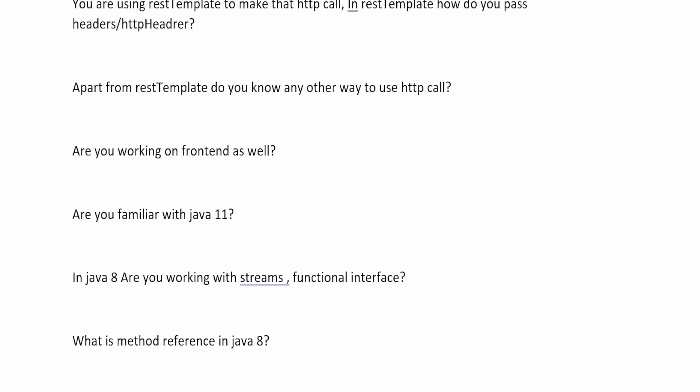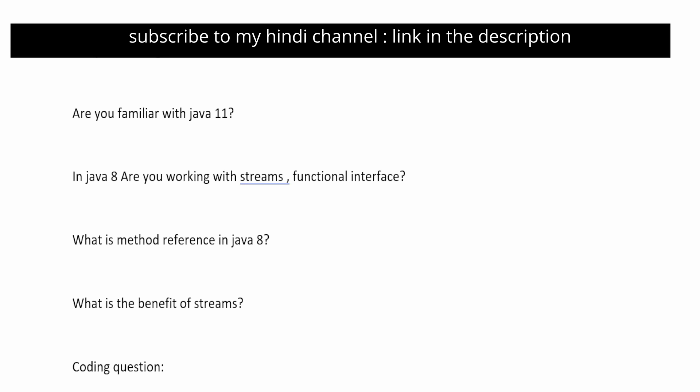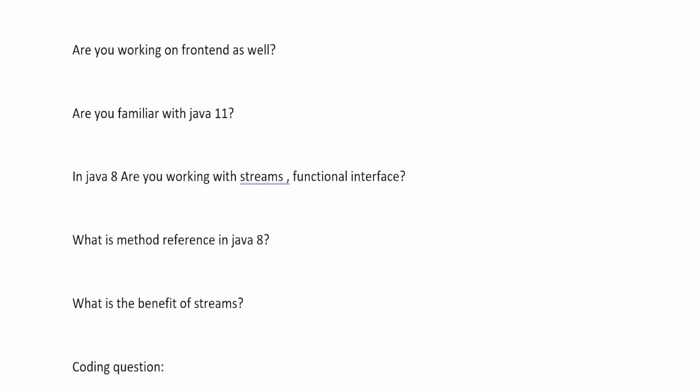The next question is: what is method reference in Java? Method reference is a feature introduced in Java 8. It is a compact and easily readable writing syntax for a lambda expression. Lambda itself is a shortened way of writing functional interface code, and method reference is an even more compact way of writing a lambda expression.